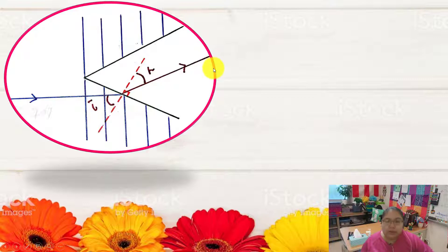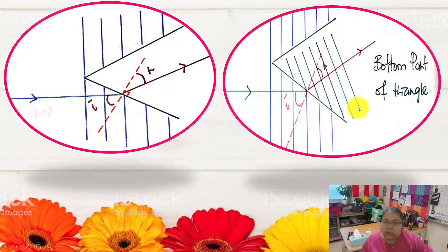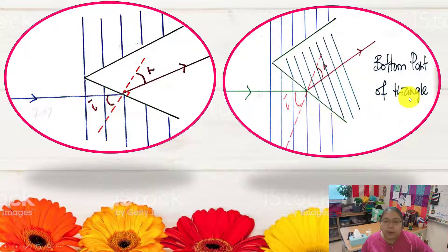Now I draw the direction and then the wave pattern for the lower part. The wave pattern must be 90 degrees with the direction of the refracted ray. This gives us the wave pattern after refraction for the bottom part of the triangle.